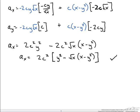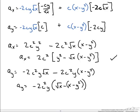For the y component: the left side gives minus 2c squared times y times the square root of x, and the right side subtracts 2c squared times y times the quantity x minus y squared. Rewriting the y component of acceleration in simplified form gives us the following expression.